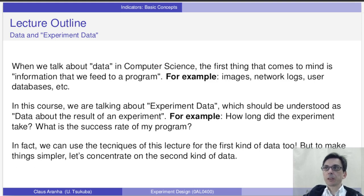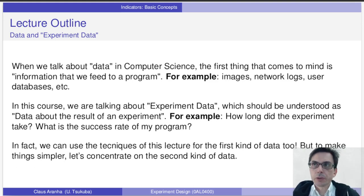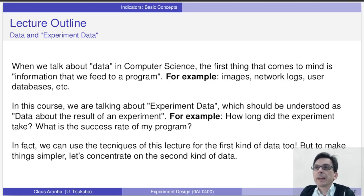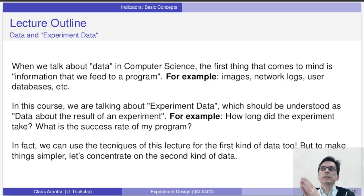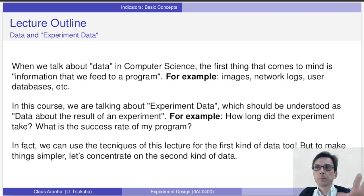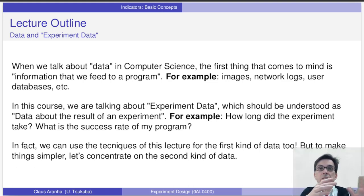Before we begin, I want to explain a little how I use the word data in this course. In computer science, when I say data, we think of things like the training dataset of a neural network, or an SQL database, or the log files of a server. Of course, this is all data. But in this class, I use the word data to talk about something a little bit different. Here, when I say data, I mean the result of an experiment. So the result of an experiment is the data that we are going to model and analyze using statistical techniques. Of course, these techniques could also be used for the first kind of data I mentioned — in fact, this is done very frequently in machine learning. But be careful not to confuse the two. When I say the word data in this course, I want you to hear the result of an experiment.